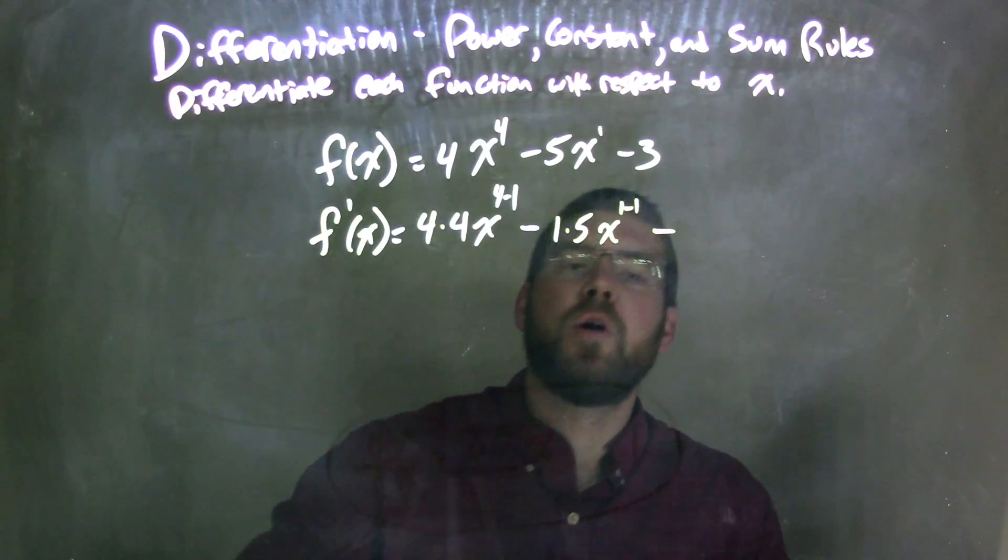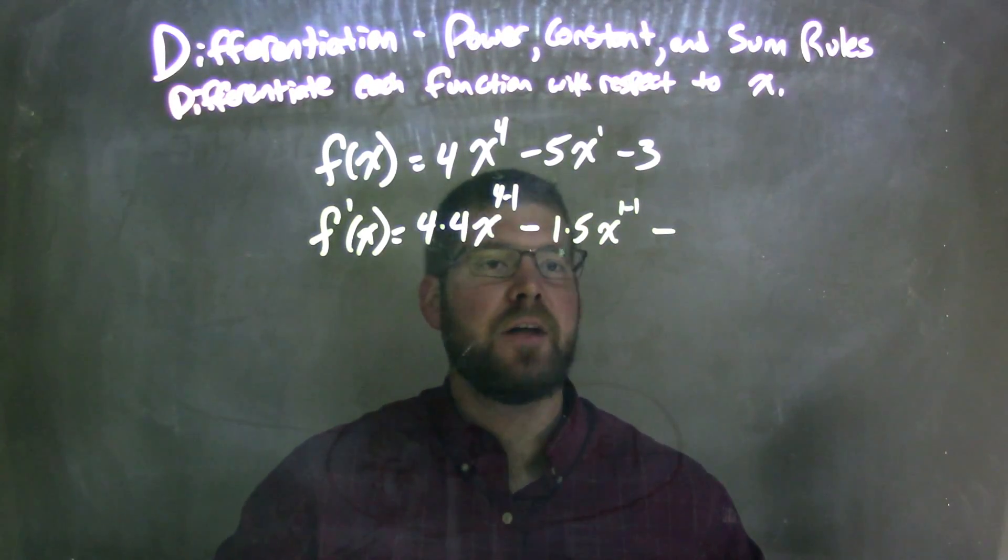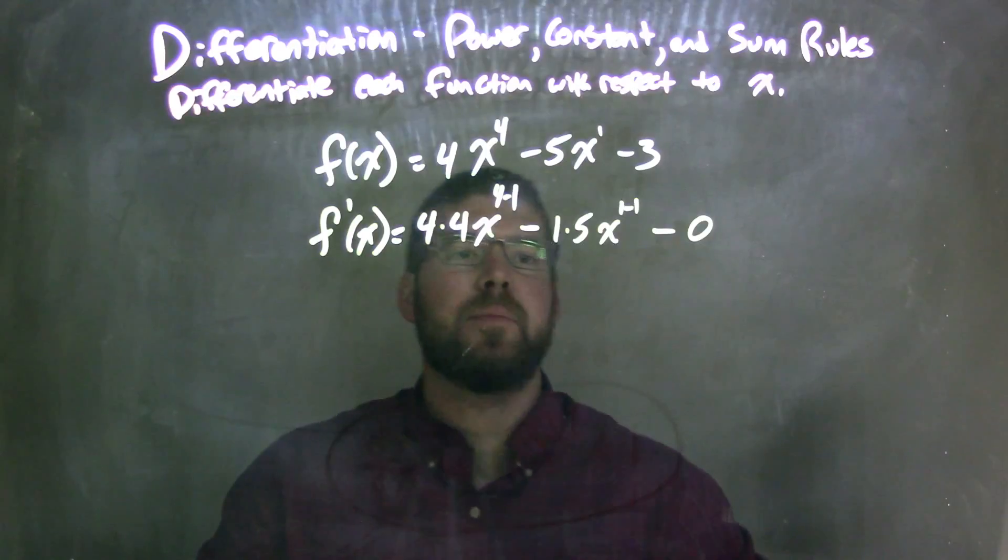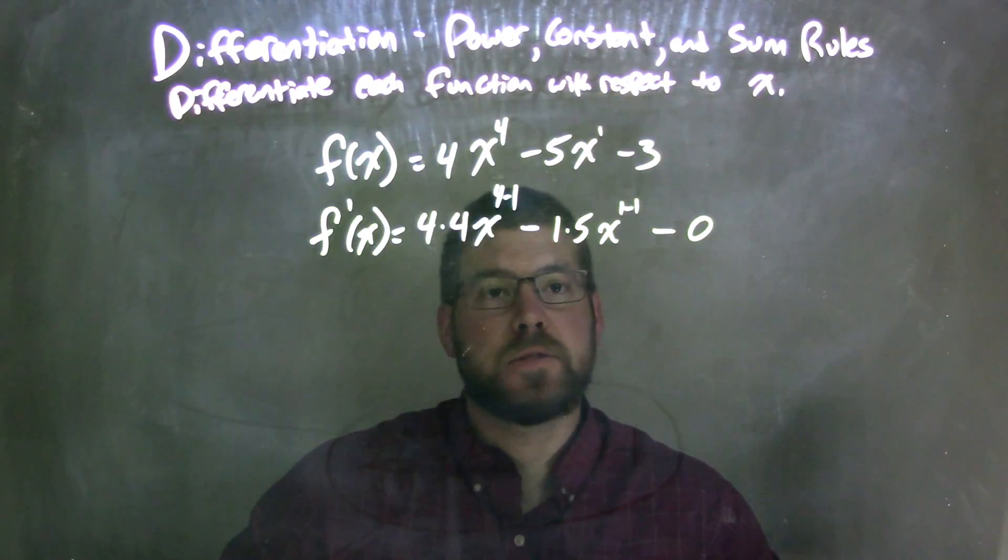Well, derivative of 3, 3 is a constant, derivative of a constant is just 0. So now let's go simplify this.